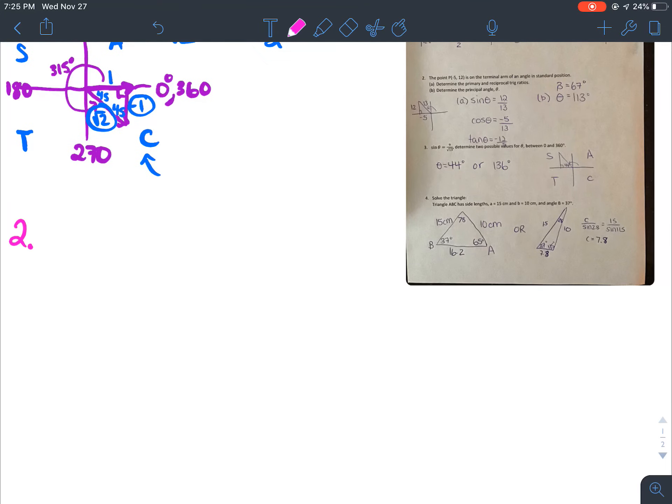Question 2 was a point. So the point was negative 5, 12, and it was on the terminal arm of an angle in standard position. So if we wanted to draw it, so we got 0, 90 degrees, 180, 270, 360.